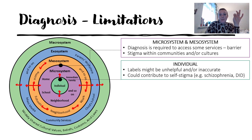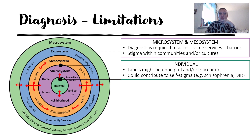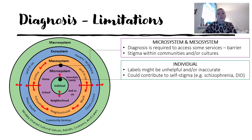At the microsystem and mesosystem level: a diagnosis is sometimes required to access services, acting as a barrier. Some people need a mental health diagnosis to access benefits. For example, eating disorder services for a long time — and this is my personal experience — unless you met the very strict diagnostic criteria, you would not get any eating disorder service support. When I was trying to access support, my BMI was low but I hadn't lost more than 10% of my body weight, so I didn't meet the criteria, couldn't get a diagnosis, and couldn't access services. There are also stigmas within communities and families across different cultures.